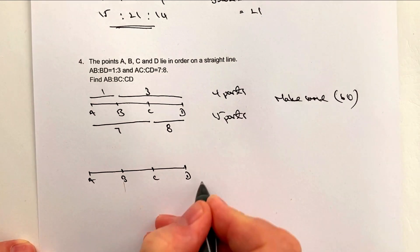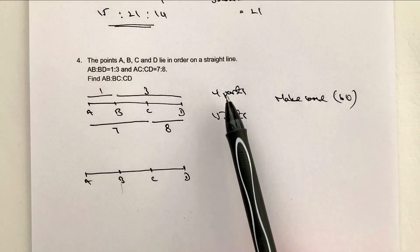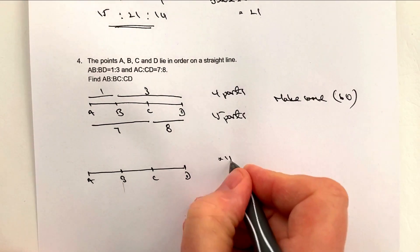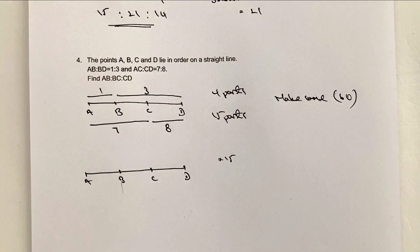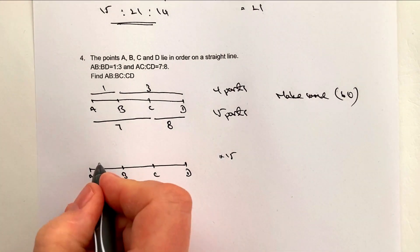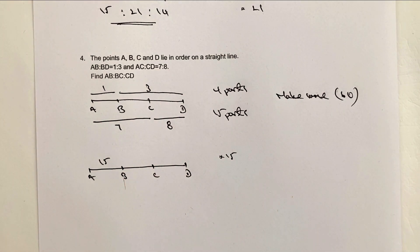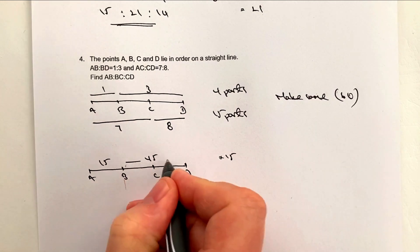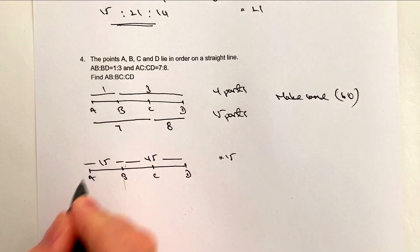But what I'm going to do is I've got these 4 parts and I mentioned that I was going to multiply it by 15. So the top is going to be multiplied by 15. So this is going to be 1 times 15 is 15, and then 3 times 15 is 45. So now I've got the top broken into 60 parts.